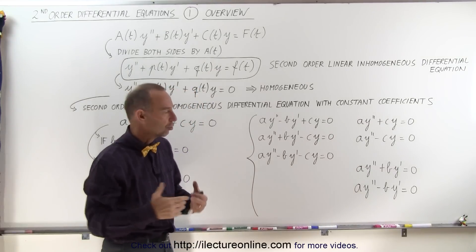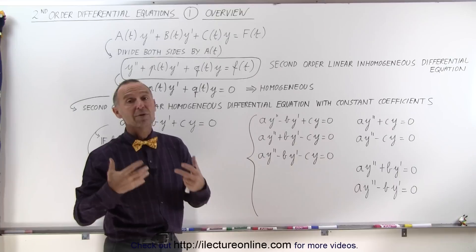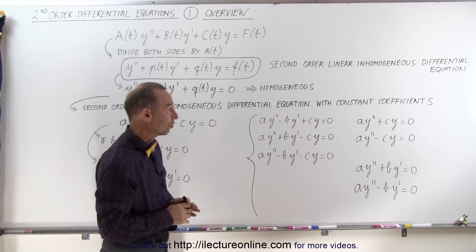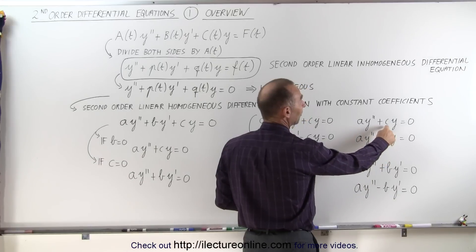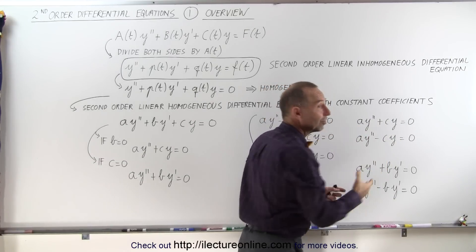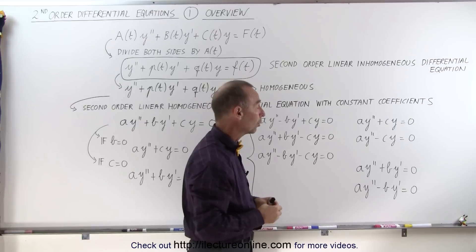And you'll see that in each case, there's some differences in the way we figure out our solutions to these differential equations. And in the case where b is equal to zero, you can see that we can have a plus c or a minus c, and that will make a difference in how you find the solution to that equation.